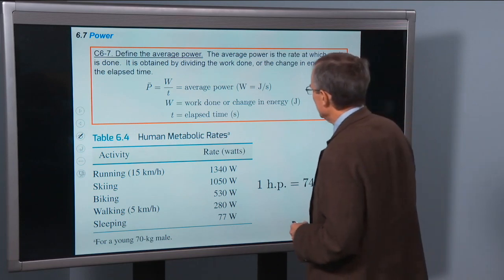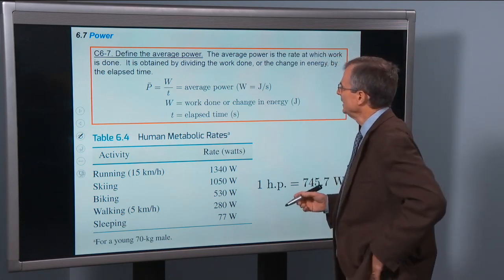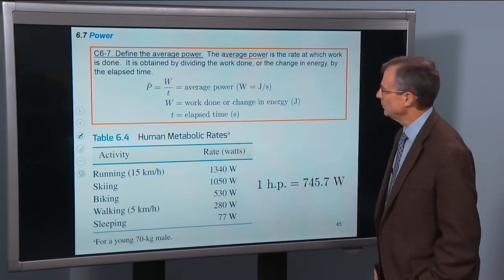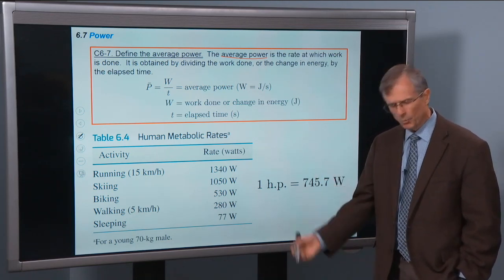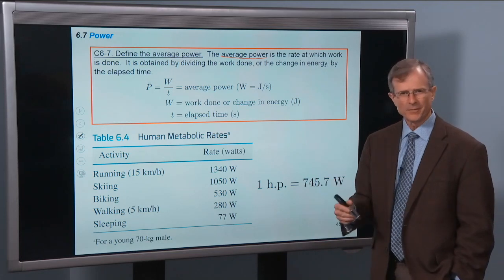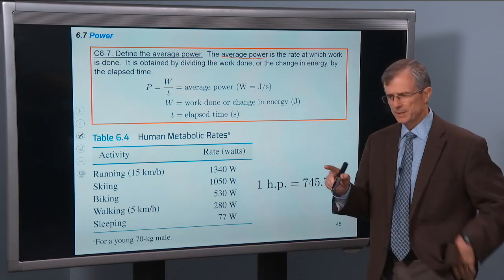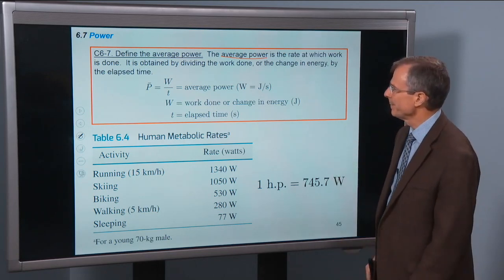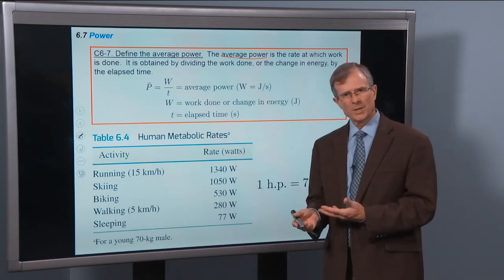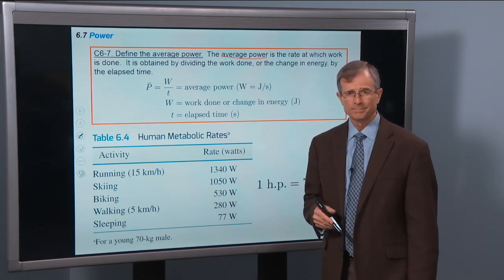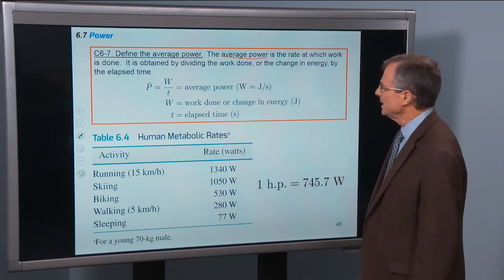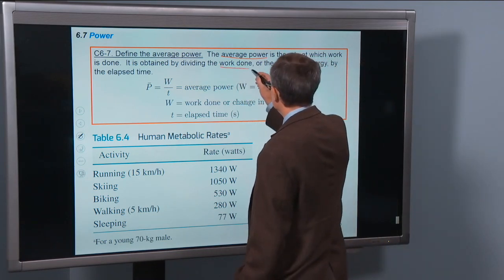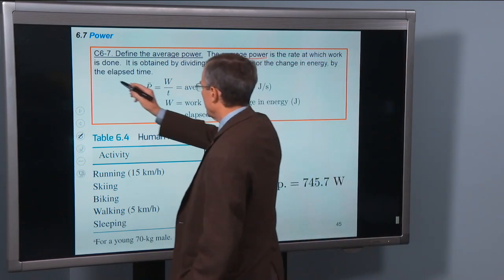Define the average power. The average power is the rate at which work is done. We've talked about work, whether it's positive, negative, or zero, depending on the orientation of the force vector and the displacement. Power is the rate at which you do work. It's obtained by dividing the work done, or the change in the energy, by the elapsed time.